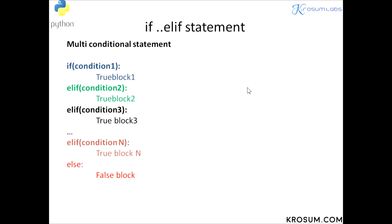See the flow: first, control will go to condition one and test it. If condition one is true, we'll move to the true block section, that block will execute, and after finishing it will exit from the conditional code and move to the next line of code.